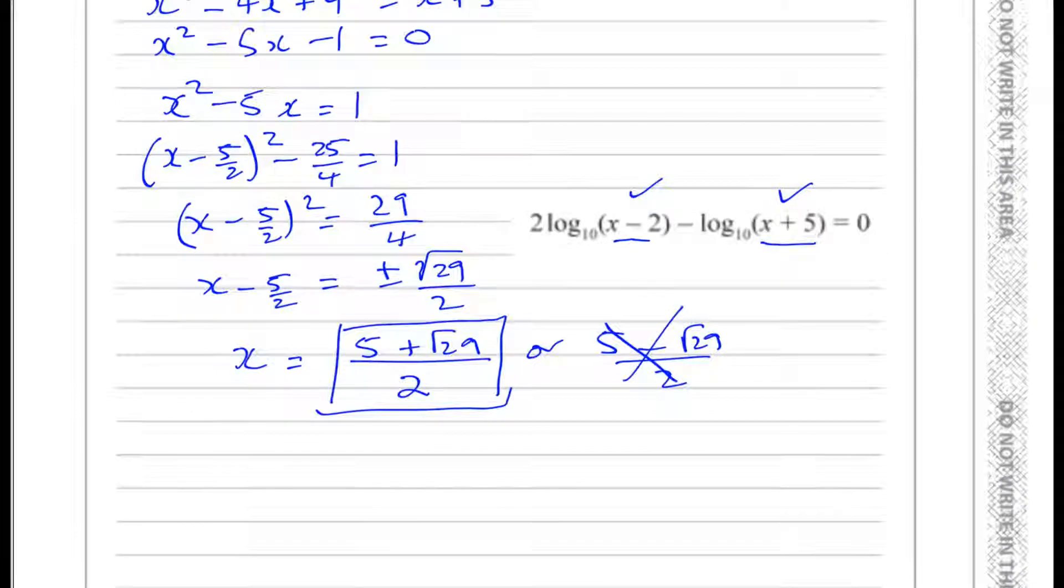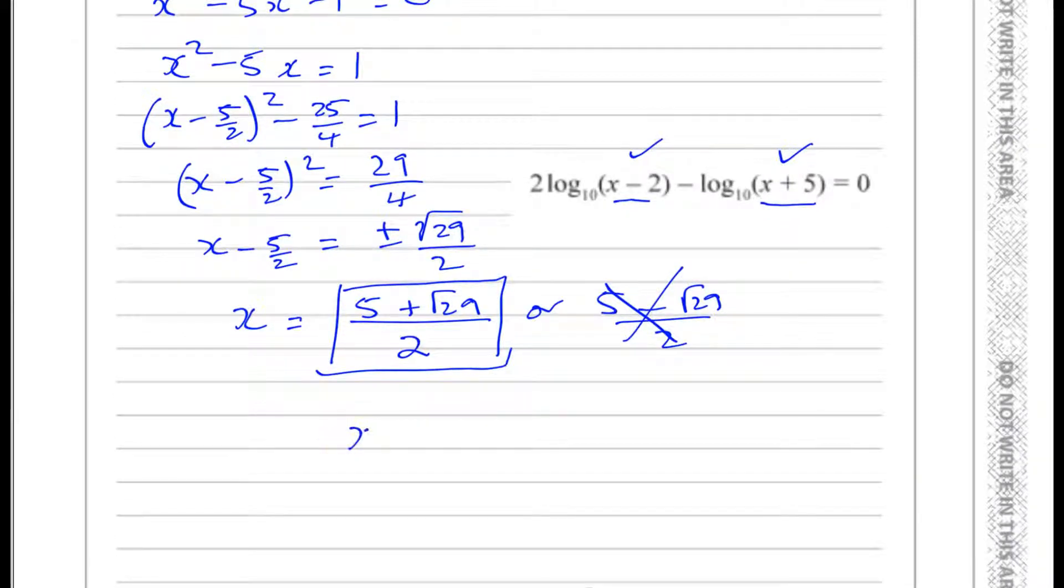Our solution is, and it says exact solution, so they don't want us to round it, is (5 plus root 29) over 2. So there's the answer to part 1 of this question.